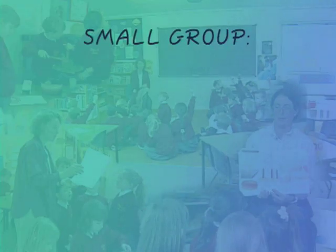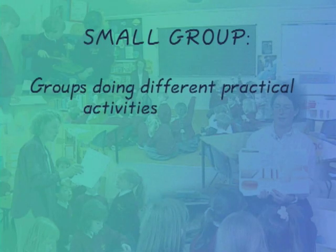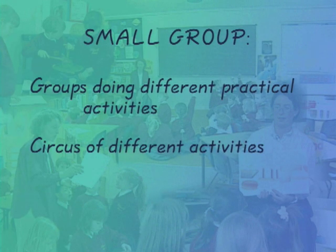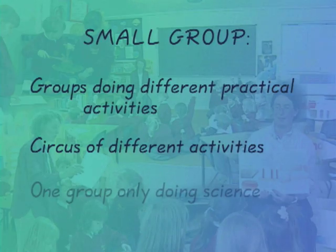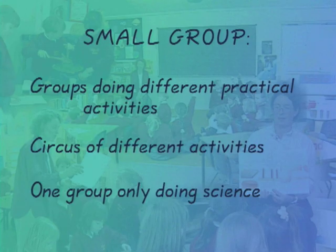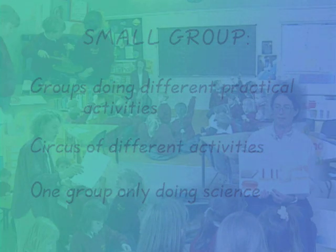Small group work may also be used to describe a variety of activities: groups of children doing different practical science tasks, a circus of different activities that groups of children move around, and one group only doing science while the rest of the class do a separate activity. For each method, you need to plan the organisation of equipment, how the children will learn, and your role in the activity.